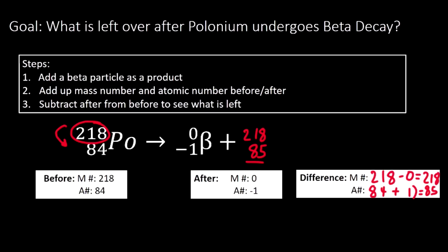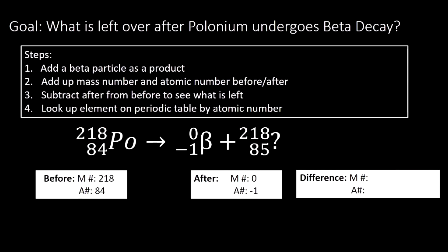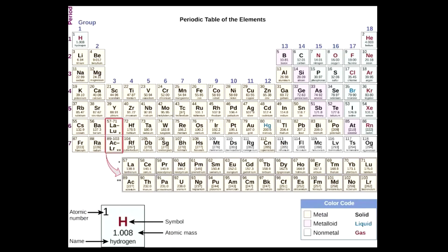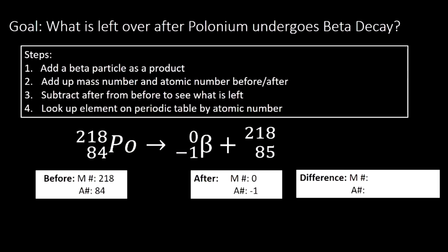The last step is to look up our element on the periodic table by atomic number. We need to write down what elemental symbol we have now. It's element number 85, because the atomic number defines an element. Element number 85 is astatine. Astatine has the symbol At. So when I go back to my reaction, I'm just going to write At next to 218. And that's my final reaction. That's how you predict the products of beta decay.